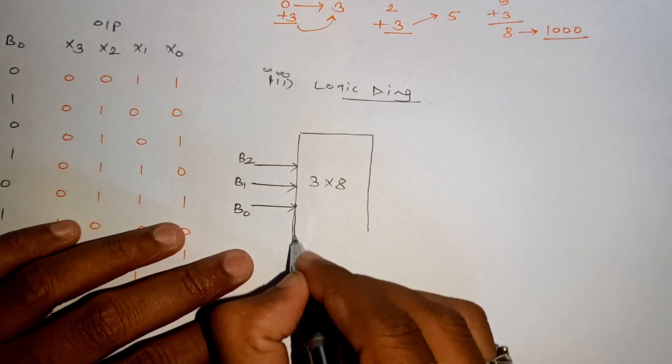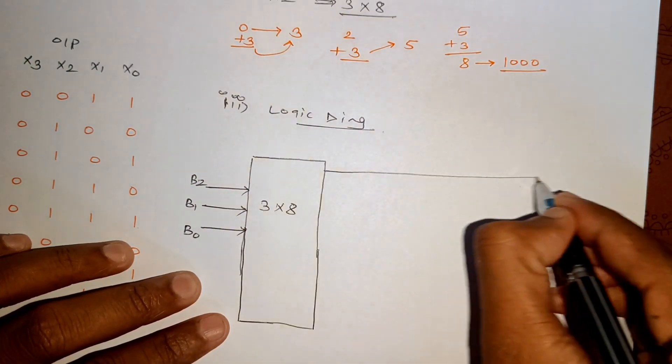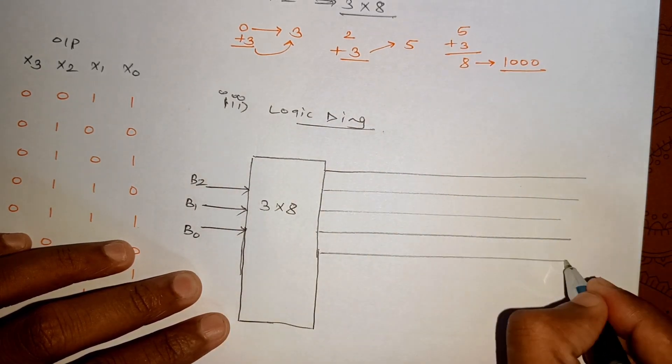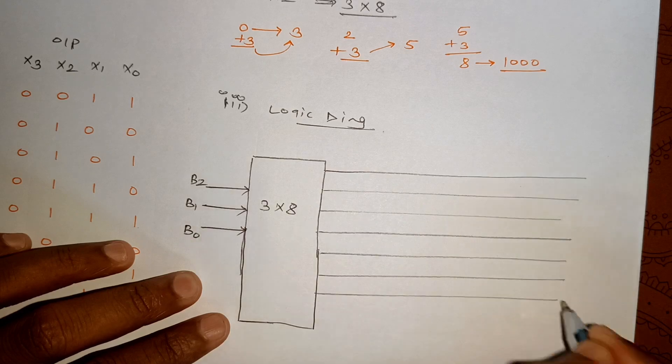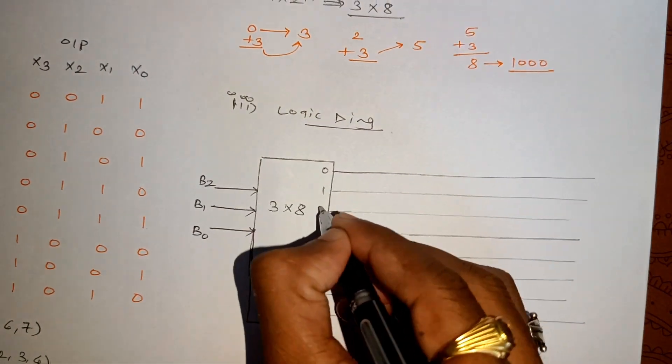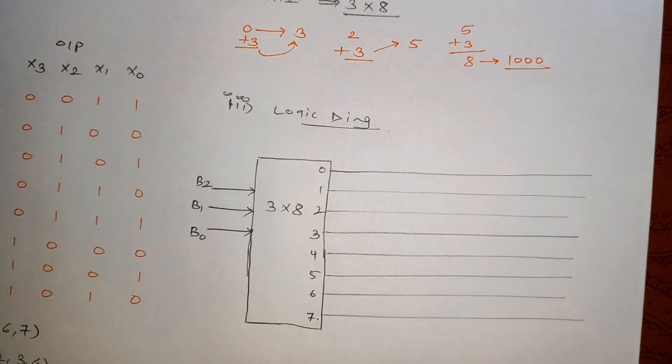And at the output side we have 8 lines. So this is our line number 0, 1, 2, 3, this is 4, 5, 6, and 7. So we will be writing this as 0, 1, 2, 3, 4, 5, 6, and 7. This is what we have done.